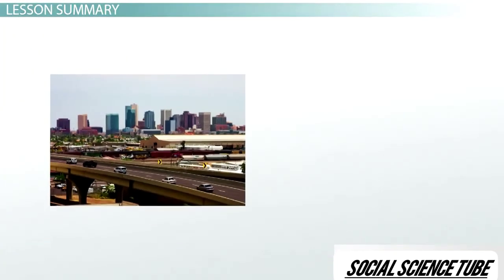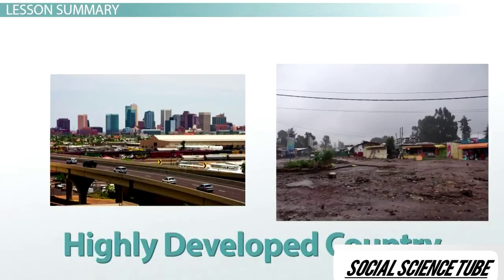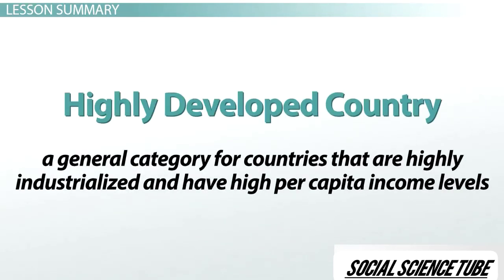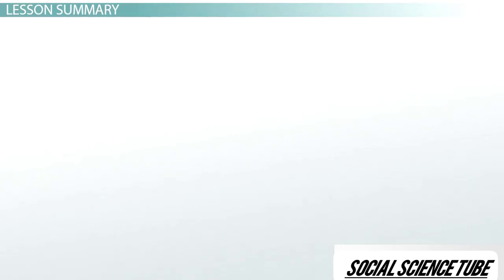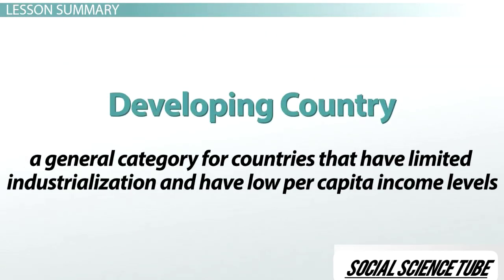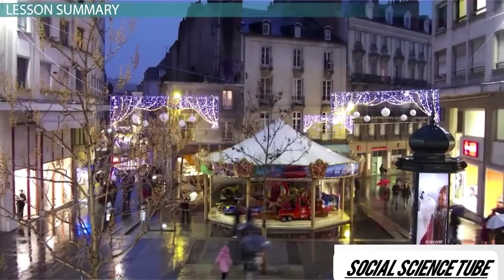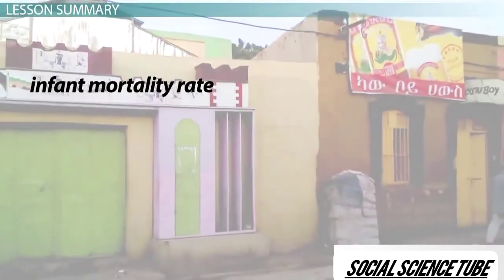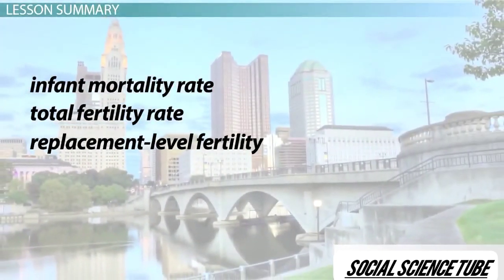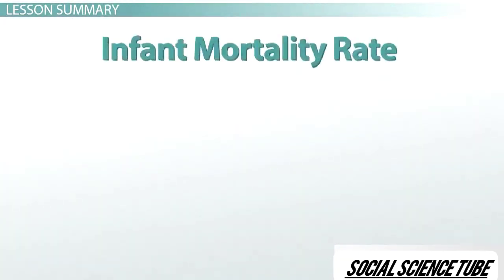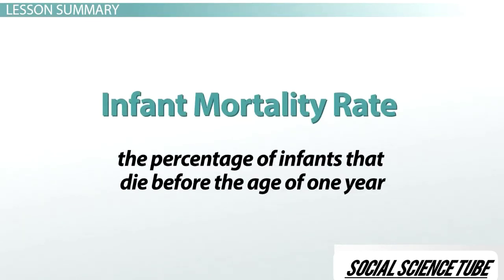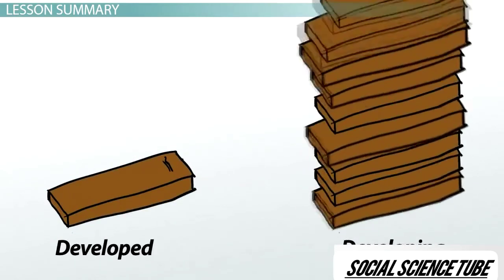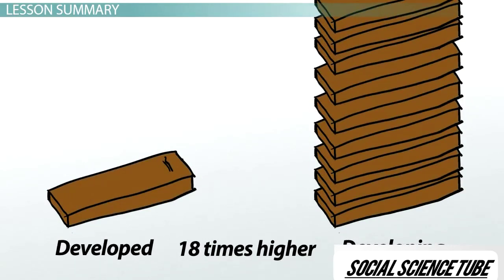Let's review some major population characteristics that differ between highly developed countries and developing countries. A highly developed country is highly industrialized with high per capita income levels, while a developing country has limited industrialization and low per capita income levels. They also have varying population characteristics in terms of infant mortality rate, total fertility rate, replacement level fertility, and age structure. Infant mortality rate is the percentage of infants that die before the age of one year, and is on average 18 times higher in developing countries than in developed countries.